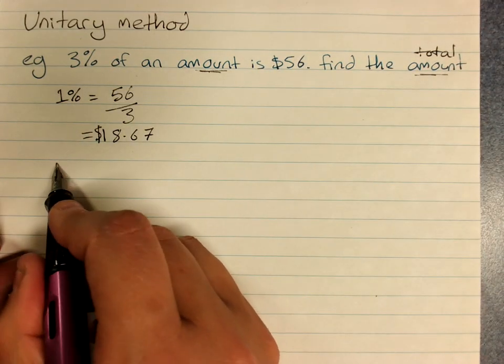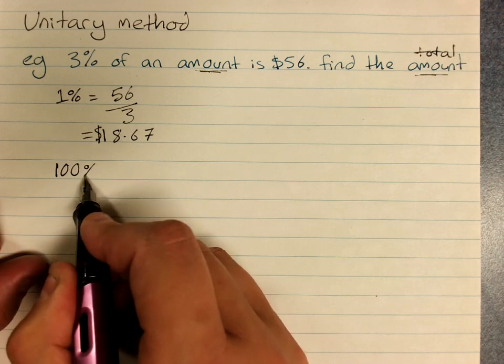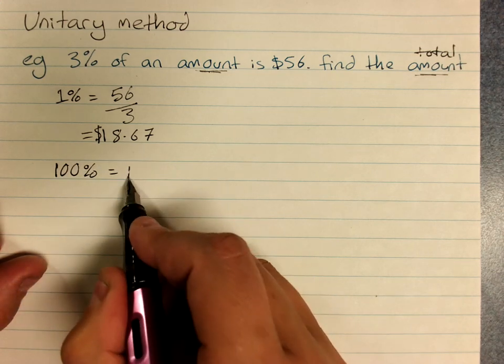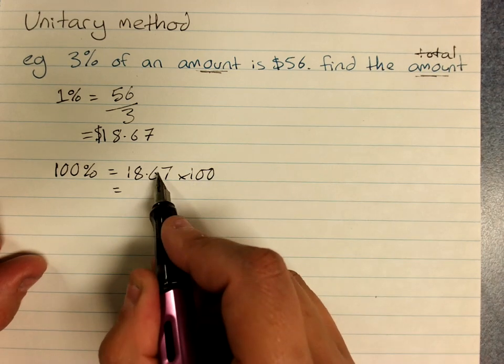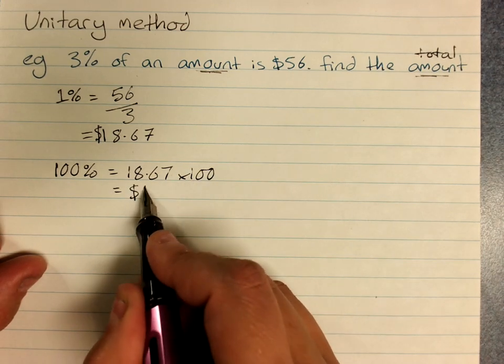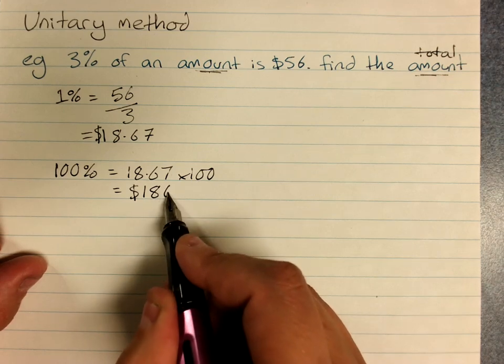We then need to find 100%, and we just do 1% times 100. We don't need our calculators for that because that's just moving the 2 decimal points: 1,867.